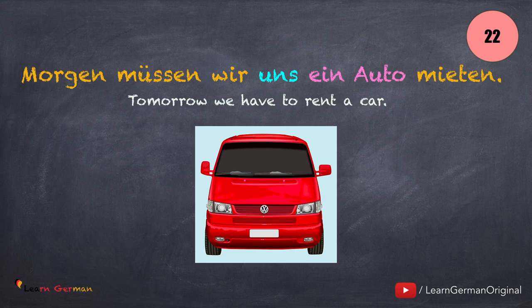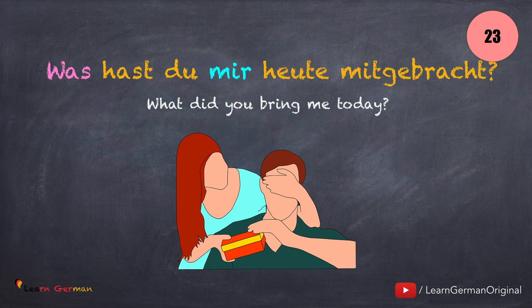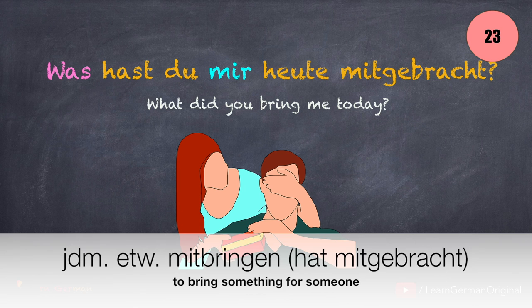Let's move on to the next one. This is a trennbares Verb: Was hast du mir heute mitgebracht? Jemandem etwas mitbringen. Mitgebracht is the Partizip-Perfekt form.